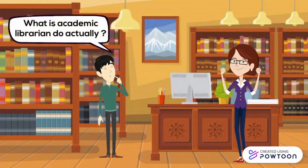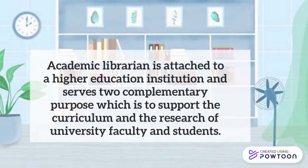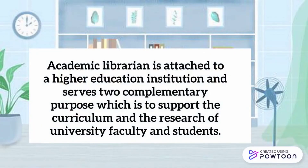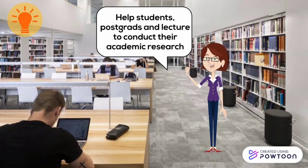I can assist you. Actually, what does an Academic Librarian do? An Academic Librarian is attached to a higher education institution and serves two complementary purposes: to support the curriculum and the research of the university faculty and students. Academic Librarians are the friendly people you see at the library. Working in university and college libraries, these marvelous people help students, postgrads and lecturers to conduct their academic research by managing library collections, liaising with book suppliers, and making sure library users have access to e-journals and other internet resources.